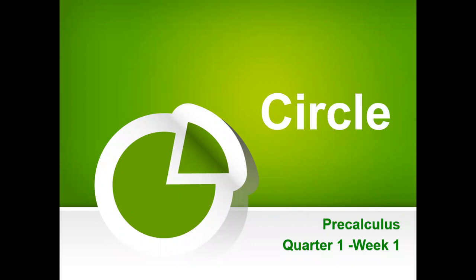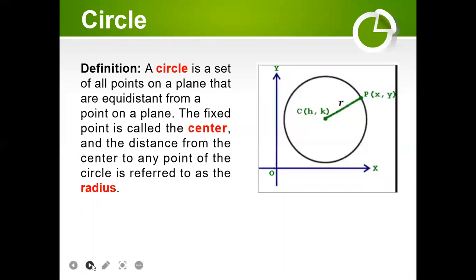So let's focus on the definition of the circle and to determine the standard form of the equation of the circle. A circle is a set of all points in a plane that are equidistant from a point on a plane. Now the fixed point is called the center and the distance from the center to any point of the circle is referred to as the radius.